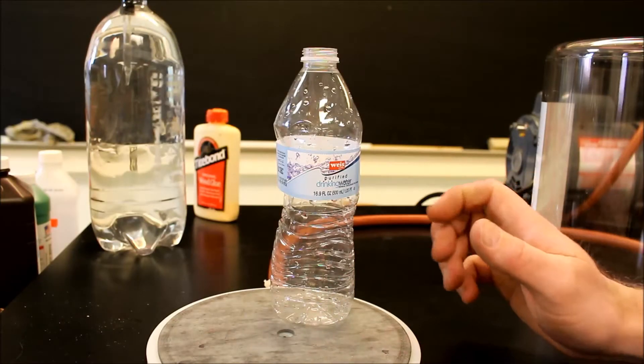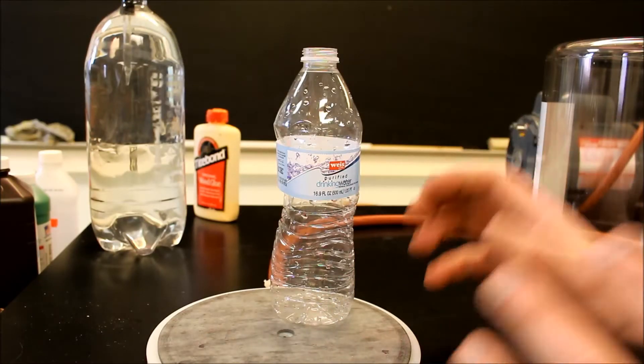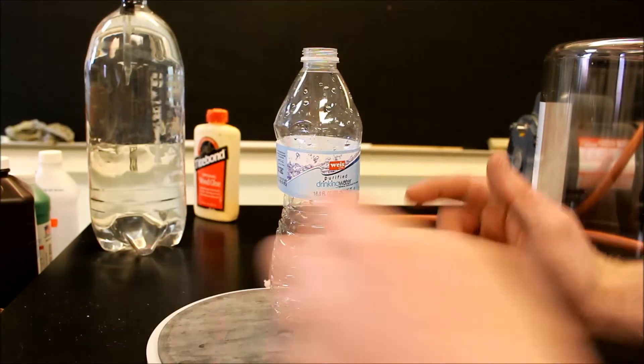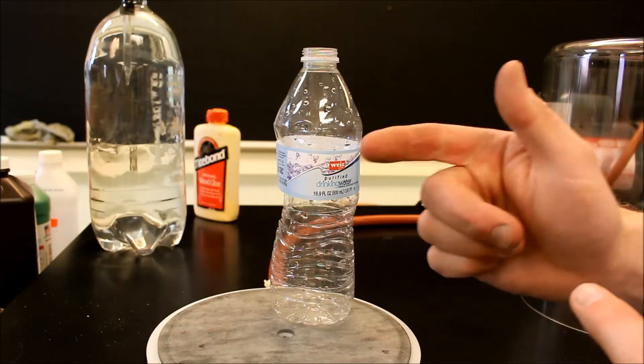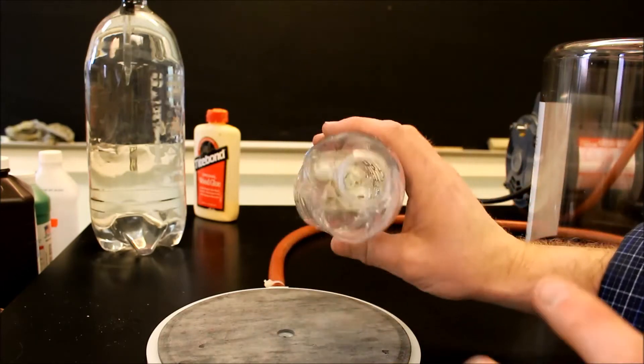Under normal atmospheric pressure, there's 14.8 pounds per square inch pressing on the sides of this bottle. But there's also 14.8 pounds per square inch pushing from the inside out. The bottle's not empty. It does contain air.